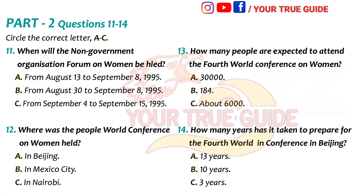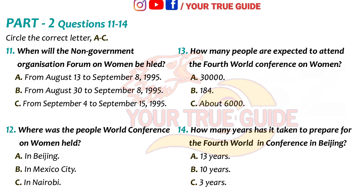Who can participate in the NGO Forum 95? Any individuals or groups who fill in an application form and send 50 US dollars to NGO Forum, New York, by April 30th, 1995. Who will attend the Fourth World Conference? Each member state of the UN will send an official delegation. There are 184 member states in the UN. Also, any person that represents an organization which has received accreditation, which had to be done by January 13th, 1995. 6,000 people are expected to attend this conference.